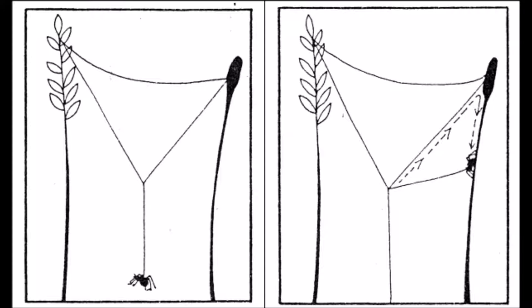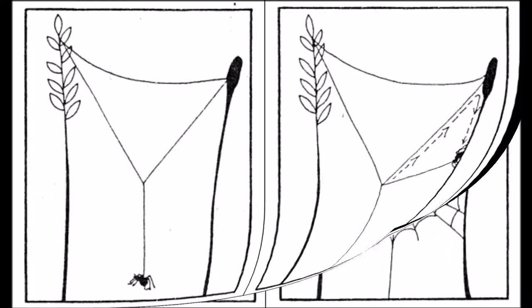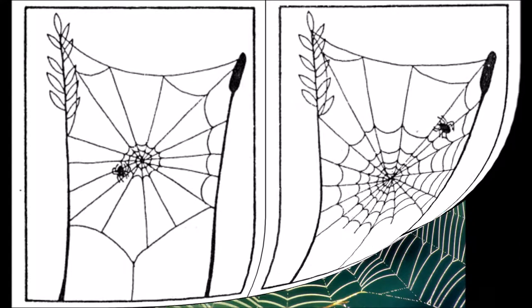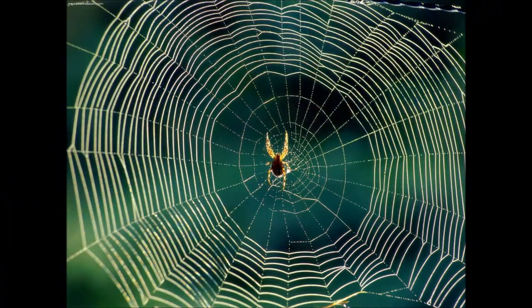This is the foundation of the web. From here, the spider anchors the web to the ground and various other branches, before constructing the familiar spiral pattern of the web that is commonly seen. Once the base of the web is created, the spider coats the web in a sticky substance, allowing it to catch and trap insects for food. The web is able to stretch, which keeps it from breaking when something flies into it.